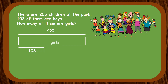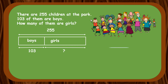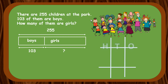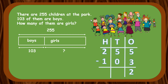The model shows us that in order to find the number of girls, we need to find the difference between the total number of children and the number of boys. Let's do the subtraction together. We first do the 1's place: 5 minus 3 gives us 2. Next is the 10's place: 5 minus 0 equals 5. Finally the 100's place: 2 minus 1 is 1. Therefore there are 152 girls at the park.